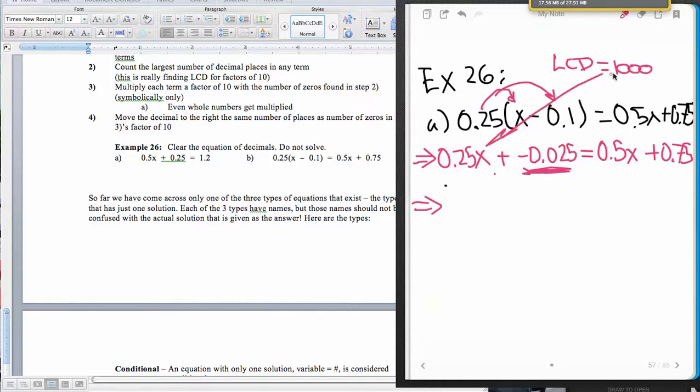So we're going to multiply that term and that term and that term and that term by 1,000. We're just going to move the decimal 3 places to the right in each case. So 1, 2, 3 places to the right gives me 250x plus 3 places to the right here is going to give me negative 25. And that's equal to 1, 2, and 3 places here gives me 500x. And then finally plus 3 places to the right, 1, 2, and 3 gives me 750.